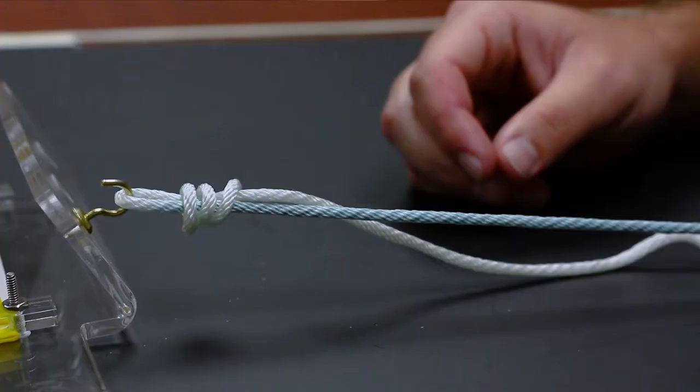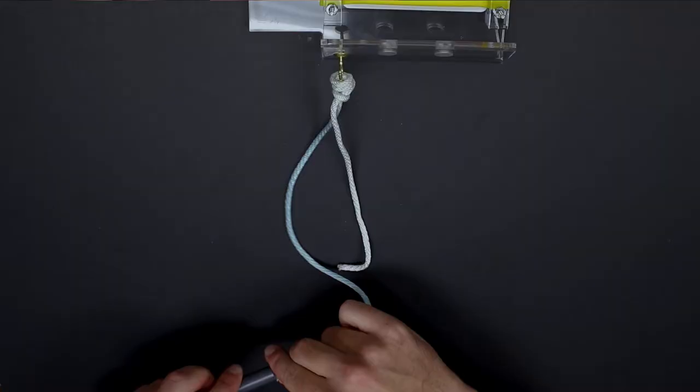We can then dress the knot prior to placing it through the cannula and we pull it against the tissue by pulling on the post.